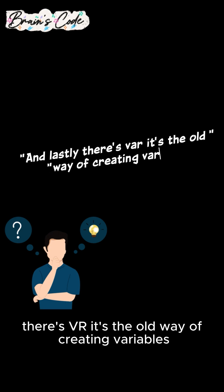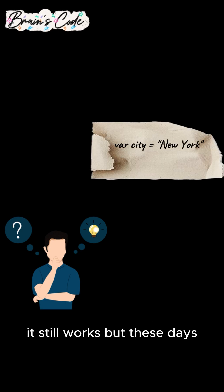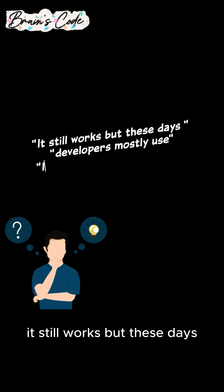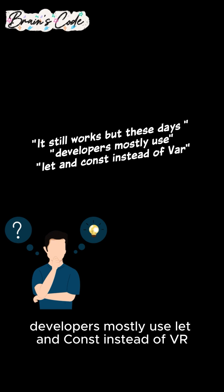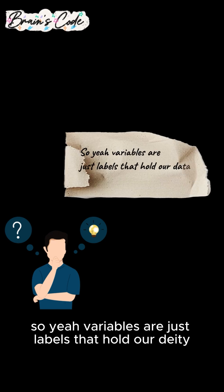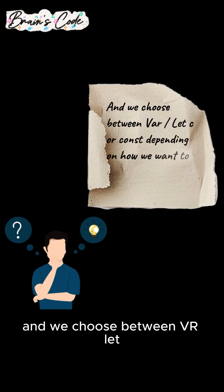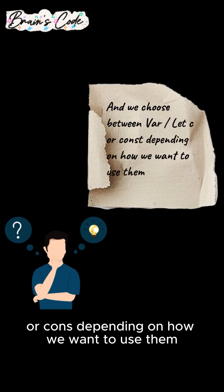And lastly, there's var. It's the old way of creating variables. var city = 'New York'. It still works, but these days developers mostly use let and const instead of var. So yeah, variables are just labels that hold our data, and we choose between var, let, or const depending on how we want to use them.